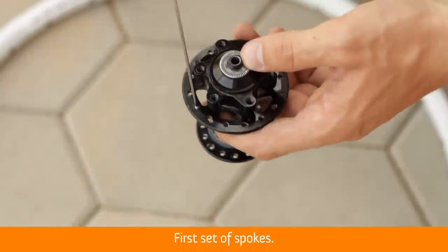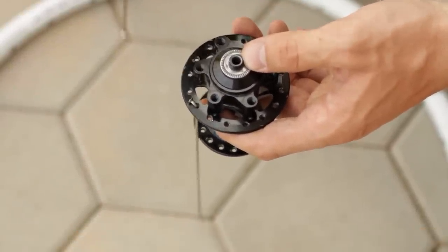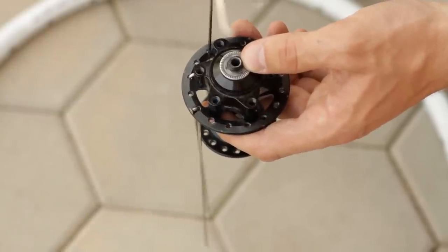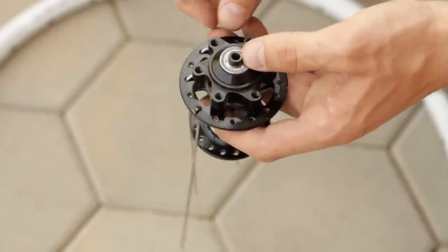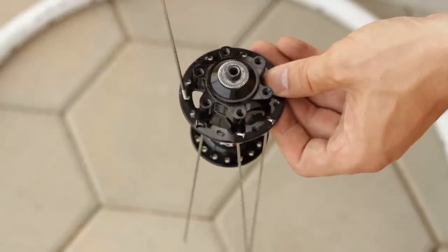First set of spokes. Drop a spoke down into every other hole in the top hub flange, so that the spoke heads are facing up. Remember, if it's a rear wheel or front disc brake wheel, this should be the shorter spokes.